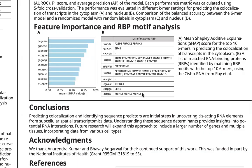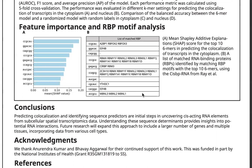We also explore the significance of different RNA sequence features in predicting co-localization. To do this, we calculate the average of the absolute SHAP value scores for each k-mer in our trained model, assessing their average impact on the model output. Additionally, the figure presents the top 10 k-mers as identified by the model.